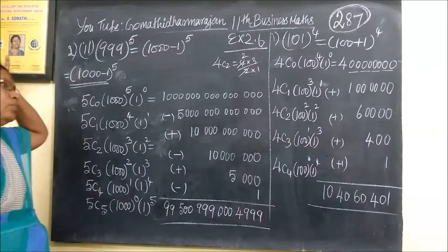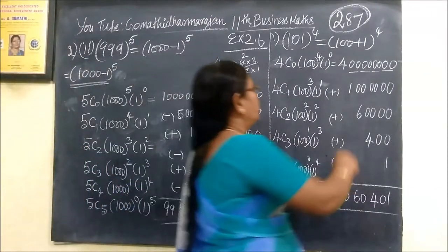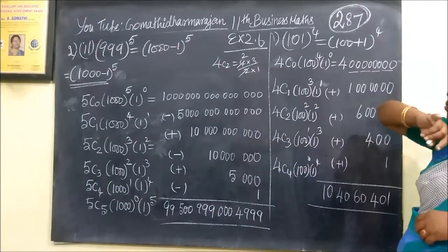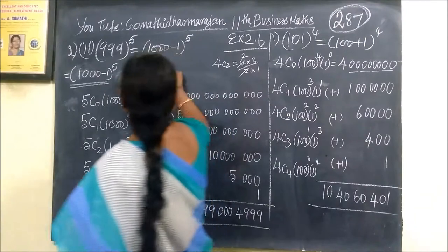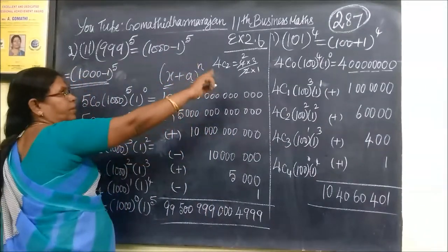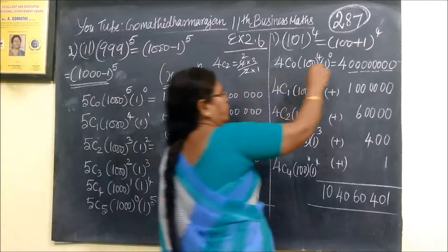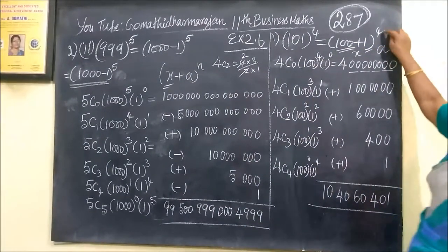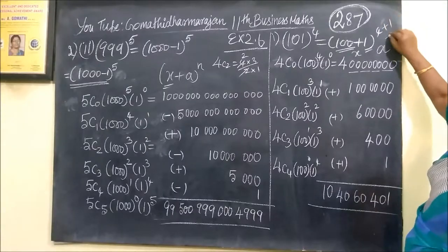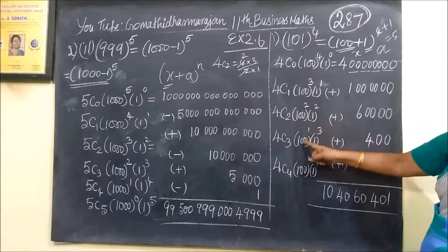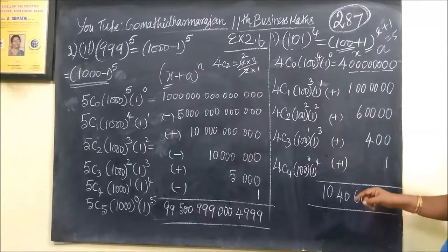You see the first one, 101 power 4. You can use the binomial theorem: (x+a) to the power n. This formula, so x plus a to the power n. So x is 100, 1 is a. The number of terms is 5. So if you count it: 1, 2, 3, 4, 5. So 5 terms are there.